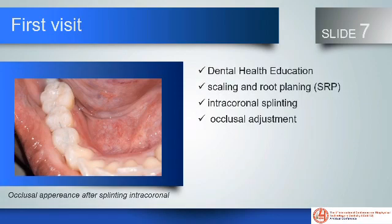At the first visit, stage 1 therapy was performed. The patient was given dental health education, scaling and root planing, and splinting to stabilize the tooth mobility. Since the adjacent tooth is missing, intracoronal splinting should be considered. Then we performed an occlusal adjustment. In the figure, we can see the occlusal appearance after intracoronal splinting.